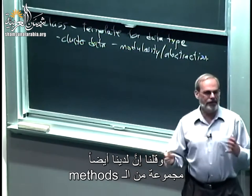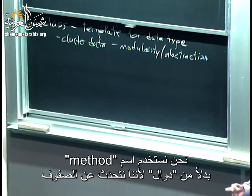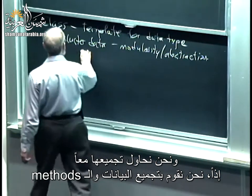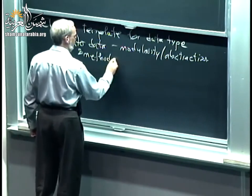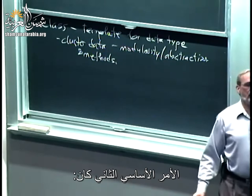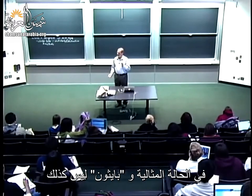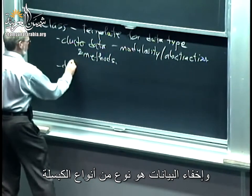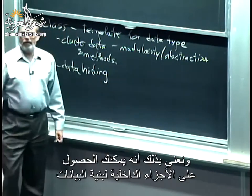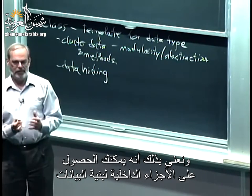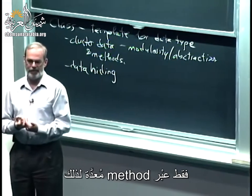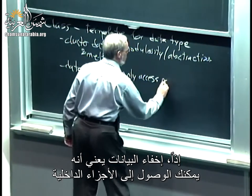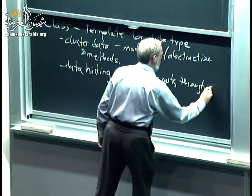The second thing we talked about is that we also have a set of methods. We're using this special name 'method' because we're talking about classes, but basically they are functions designed to deal with this data structure. We're trying to group those together as well — we cluster data and methods. The second key thing was: in the ideal case, which unfortunately Python isn't, we would have data hiding — only getting to internal pieces of the data structure through a prescribed method.